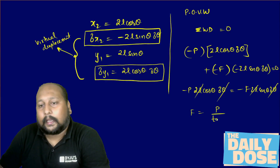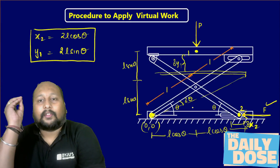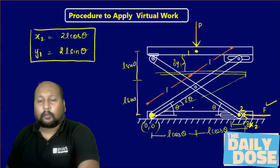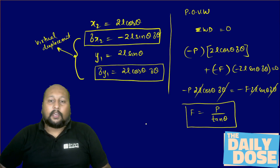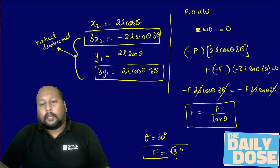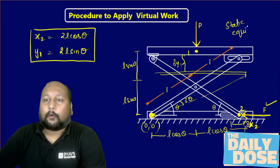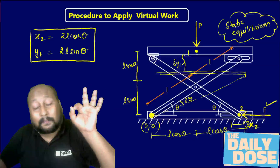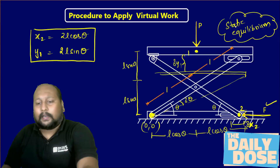Cancelling δθ and 2L from both sides, we get F = P/tanθ. This is the relation between P and F for the system to be in static equilibrium at any angular position θ. For example, if θ = 30°, then F = P/tan30° = P√3 = √3·P. So if F = √3·P at θ = 30°, the entire system is in static equilibrium. This is the power of the Virtual Work Method for complex diagrams.